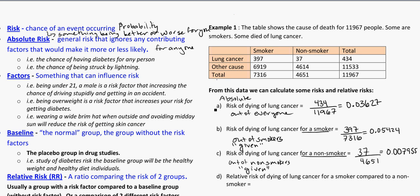So those are the risks we were looking at — risk is sort of like probability. We've talked about factors being something that can influence your risk. Another word to know is the baseline, or the normal group. This is the group without the factors — the group we would assume behaves like normal. In this situation it would be the non-smokers, because smoking is the risk factor. This is also the placebo group in drug trials. In a study of diabetes risk, the baseline group would be the healthy weight, healthy diet individuals.